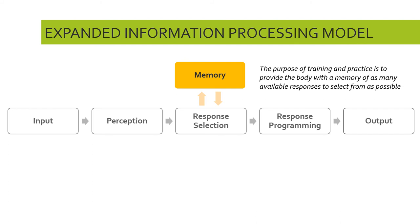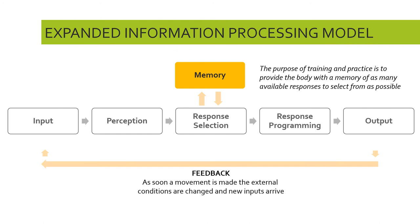The expanded information model includes the idea of memory — one way of thinking about it is as a bank of available responses we can access and choose from. The bigger that bank, the more able we are to select the optimal response in any given situation. Adding to this model, we also want to include the idea of feedback. As with the simple processing model, once output has been made and you've performed your skill, the external environment has been changed, and so new inputs will arrive.